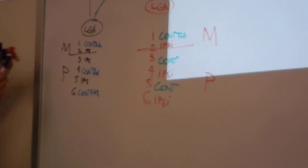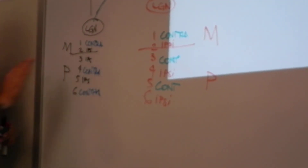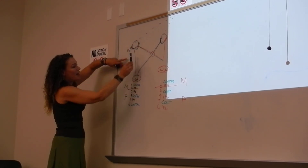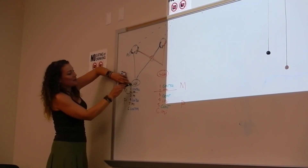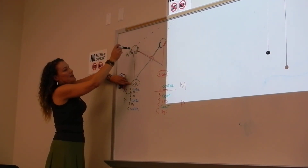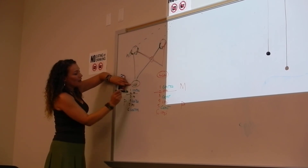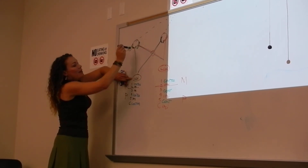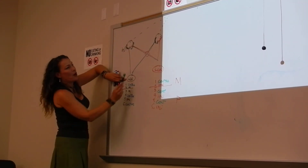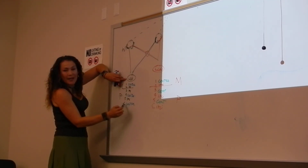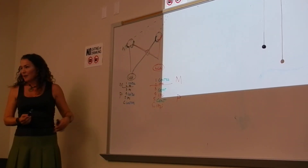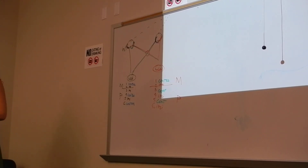So each lateral geniculate nucleus is going to be receiving information from both eyes, but at each layer it's going to be processing information from only one eye. The left lateral geniculate nucleus processes information from the left eye on layers 2, 3, and 5, and from the right eye on layers 1, 4, and 6.